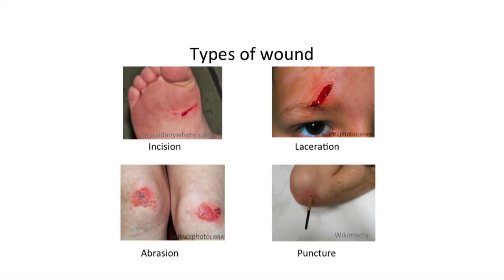A wound is a break in the epidermis or dermis. There are many types of wound. Common examples include incisions, which are caused by sharp objects; lacerations caused by blunt force; abrasions caused by superficial damage to the epidermis only; and puncture wounds, where the depth of the wound exceeds the length or width. Although the wound may appear to be minor, the consequences can be serious if not treated promptly and properly. Small wounds may result in infection, loss of function, or a considerable amount of disfigurement, which can be highly distressing for the patient.